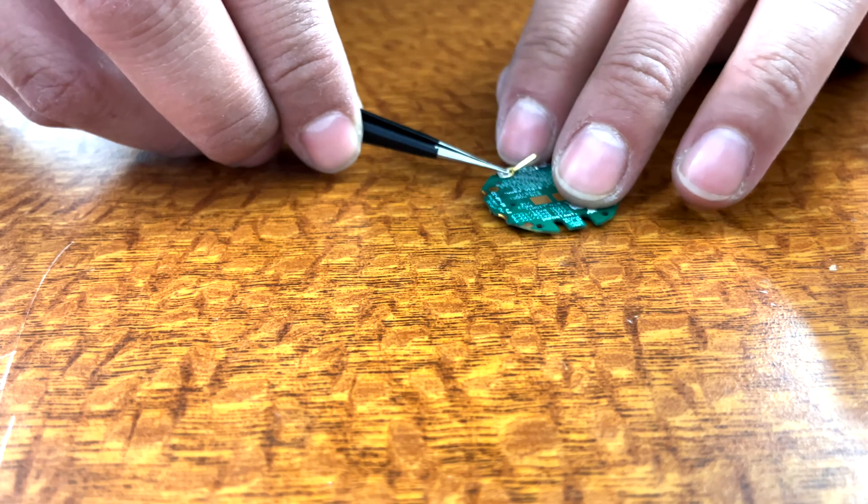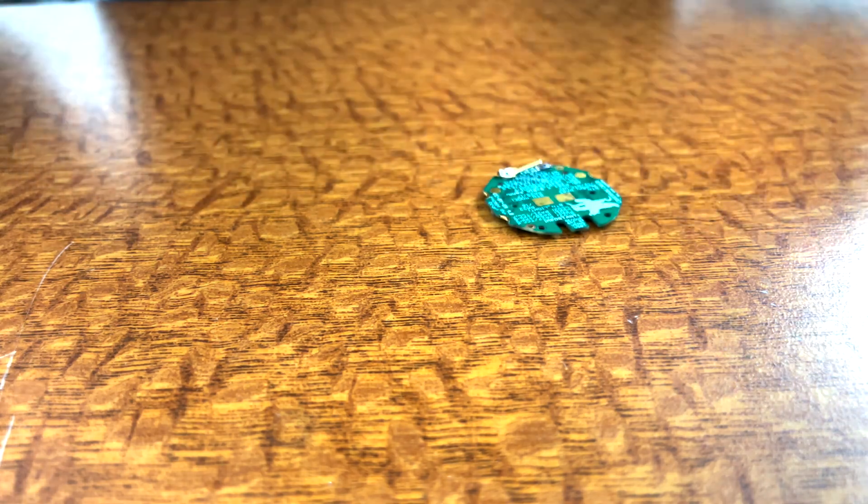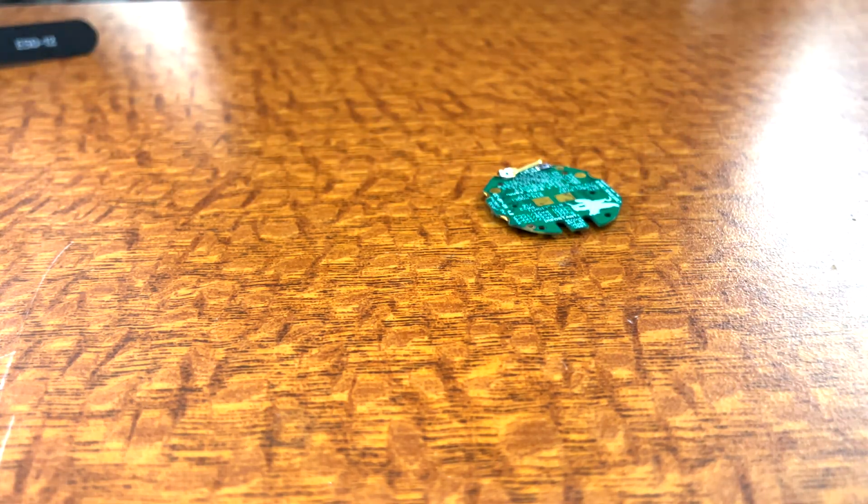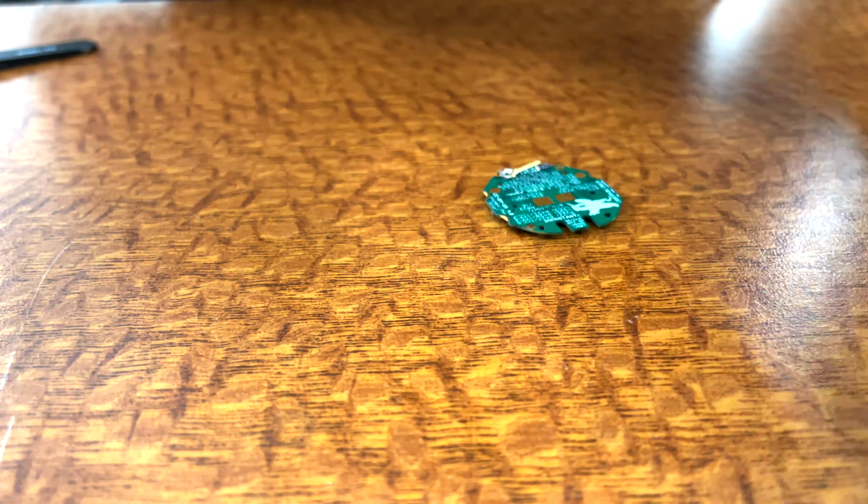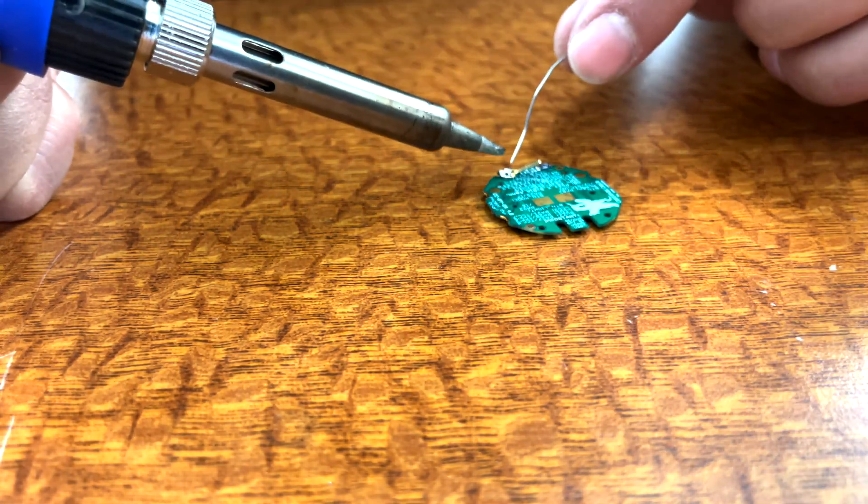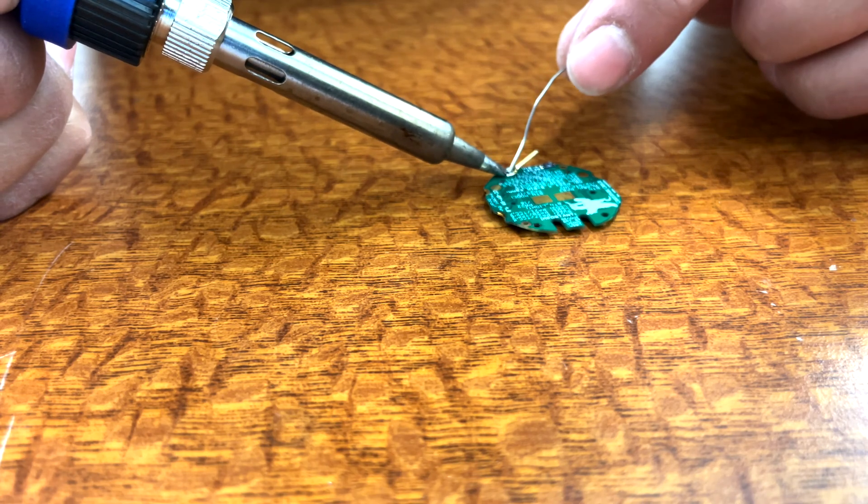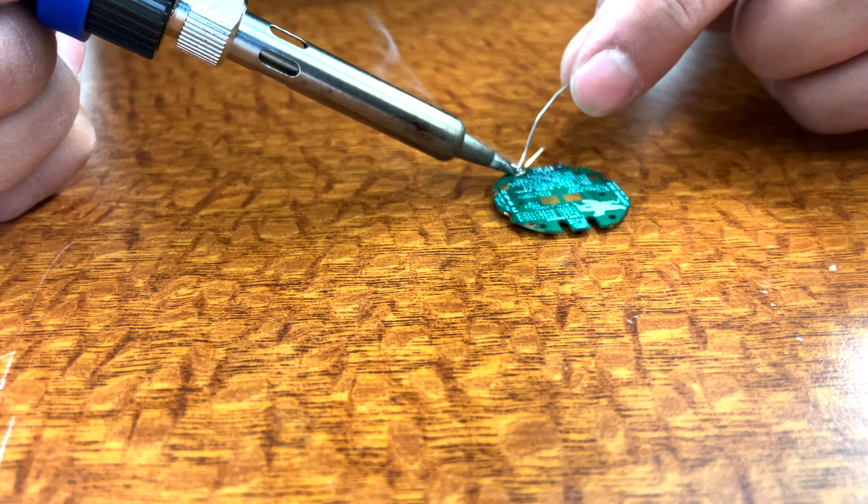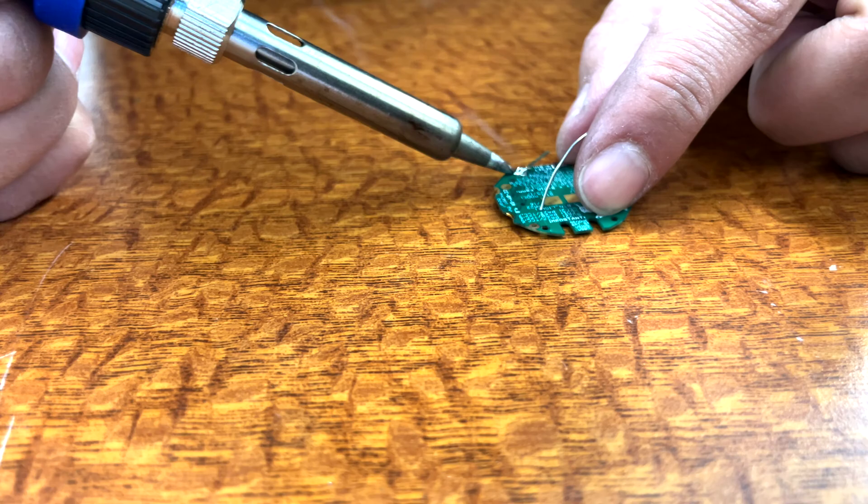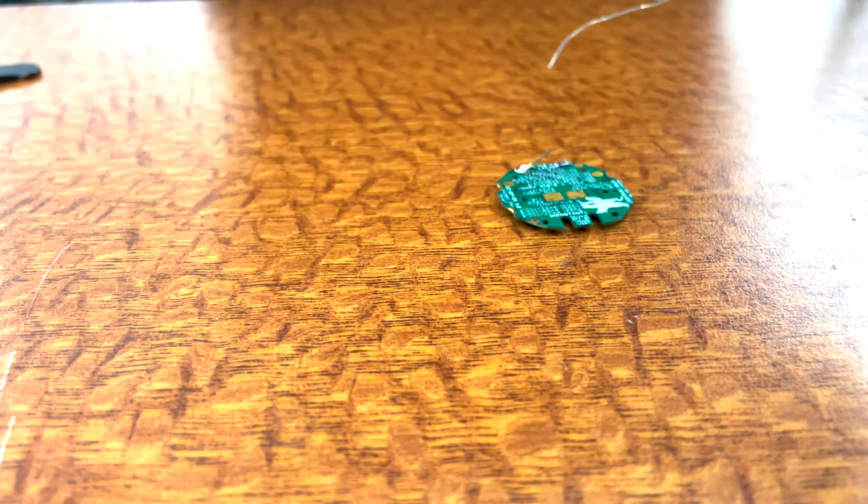Note that the buzzer connector includes a small tab, and there's also a guide hole on the circuit board, which should help keep it in place while you solder it down. Using your soldering iron and a little bit of fine solder, heat the base of the connector and melt the solder onto the pad. Once you're done, the buzzer connector should be soldered into place.